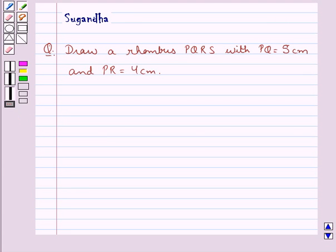Hello and welcome to the session. In this session we discuss the following question which says, Draw a rhombus PQRS with PQ equal to 5 cm and PR equal to 4 cm.